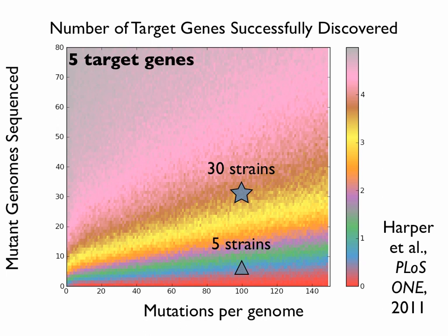To clarify the axes: on the x-axis is the density of mutagenesis in terms of number of individual site mutations per genome. On the y-axis is the number of independent mutant strains bearing the phenotype going into the scoring analysis — assume that number has been sequenced. The color of the heat map is, at the specified false discovery rate of one out of three top genes being correct target genes, how many target genes on average would you discover? This is under a simulation with only five target genes in the genome.